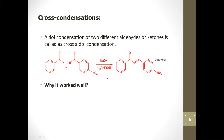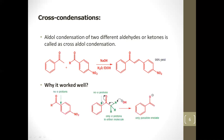The reason this reaction works so well is that para-nitrobenzaldehyde has no alpha proton, so it cannot enolize. The ketone partner also has only one enolizable proton. If both partners could enolize freely, we would get a mixture of many products.